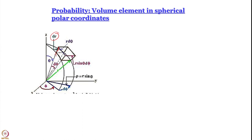The next coordinate is theta. We increase theta by a small amount dθ. The side of the volume element generated there is essentially this arc, and the length of this arc is r·dθ — dθ is a small angle, so the arc length is r·dθ. This is something we learned in 3-dimensional coordinate geometry in grades 11–12: the expression for the length of an arc is r·dθ. So two sides of the volume element are defined.